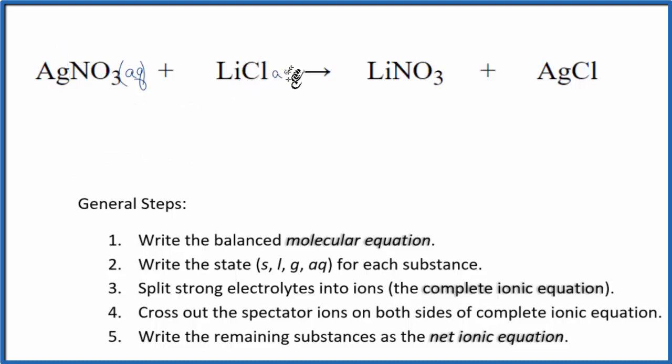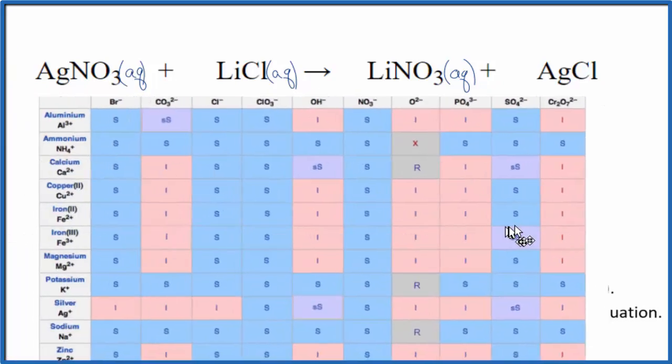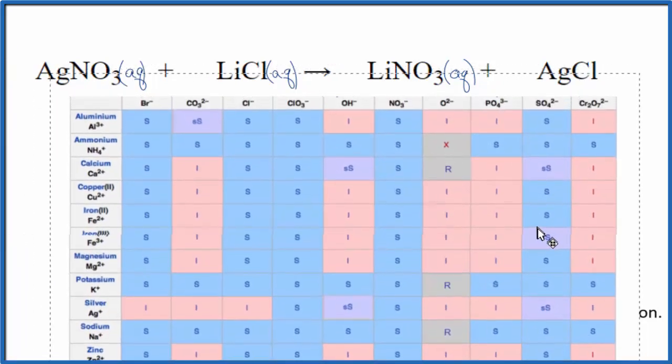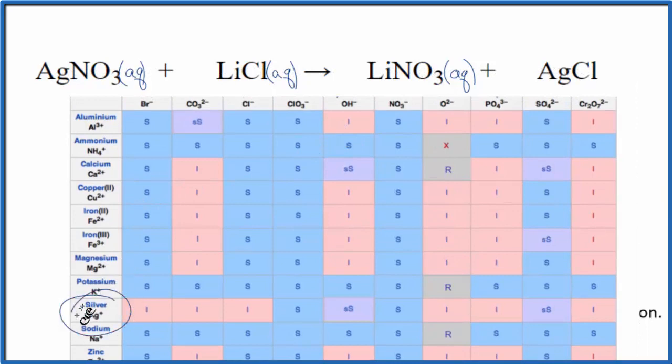Chlorides are also very soluble. Here's another nitrate. When you see silver compounds, you have to be careful because they're often insoluble. I'm going to pull up a solubility chart. We'll find silver and the chloride ion, then go down and over. You can see most chlorides are soluble except silver chloride. Silver chloride is insoluble.